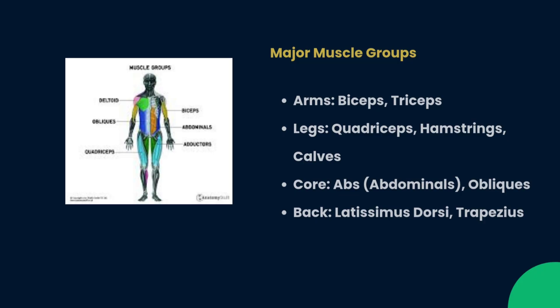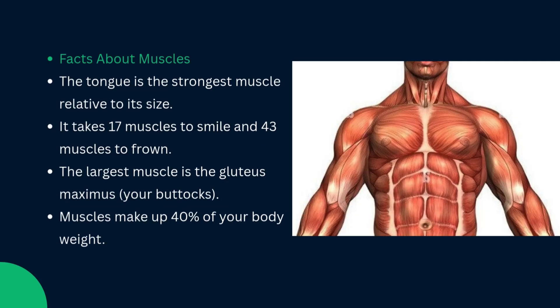Some interesting facts about muscles: the tongue is the strongest muscle relative to its size; it takes 17 muscles to smile and 43 muscles to frown; the largest muscle is the gluteus maximus, found in the buttocks; and muscles make up 40% of our body weight.